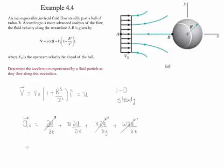Therefore, the acceleration is simply the value of the velocity times the derivative of the velocity with respect to x. Since it's only a function of x, we can change the partial derivative into a total derivative.